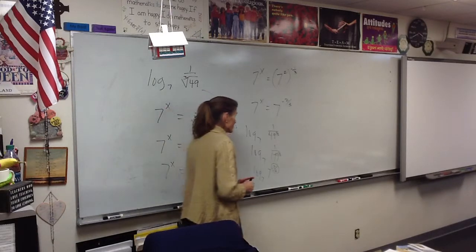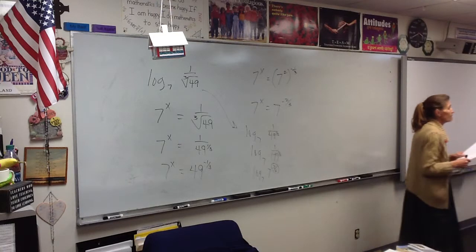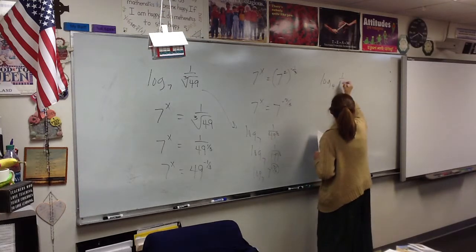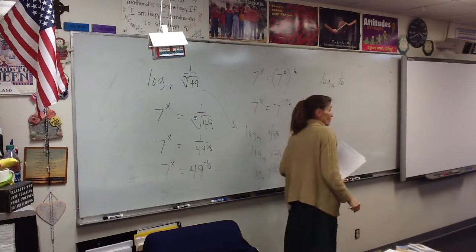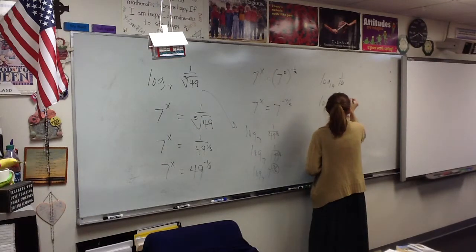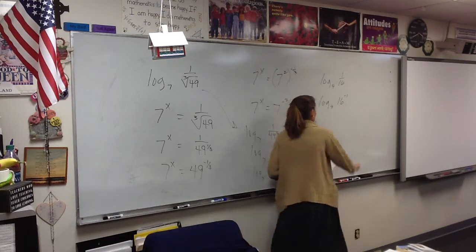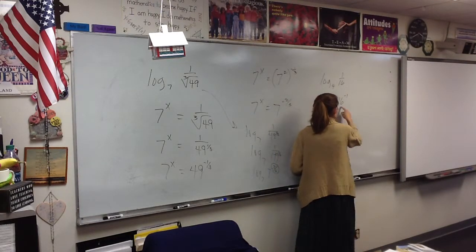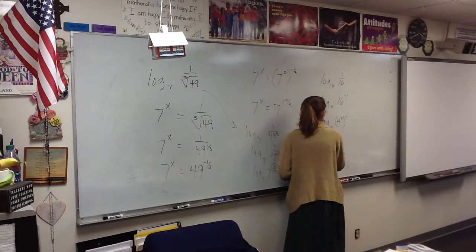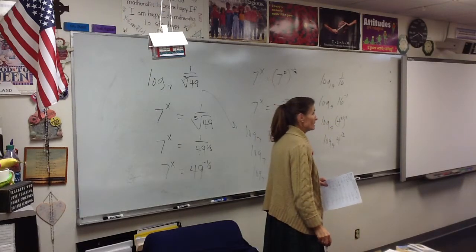Anything else on the front side? Katie? Log base 4 of 1 over 16. What do you know about 1 over? Negative. So this is the log base 4 of 16 to the negative 1st. What about 16, Katie? What's special about 16? It's 4 squared. So we have the log base 4 of 4 to the negative 2nd. So the answer would be negative 2.